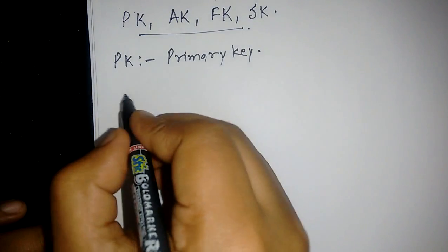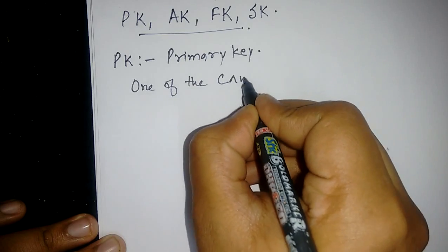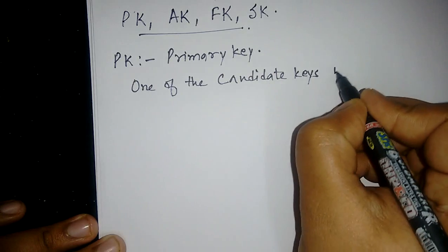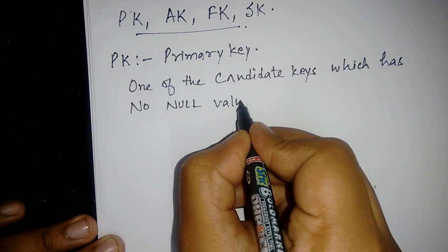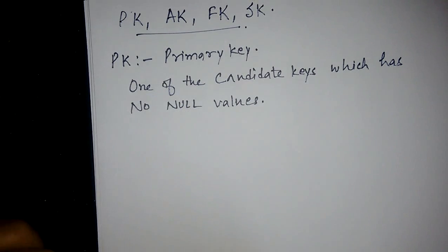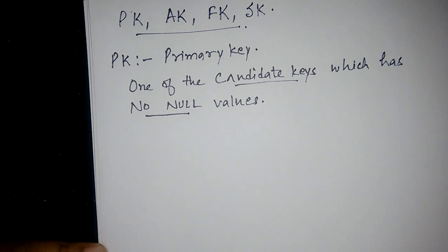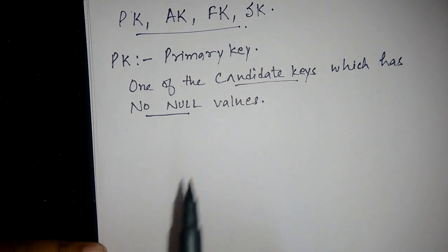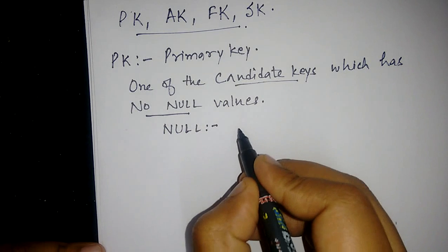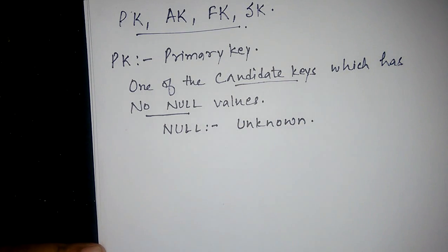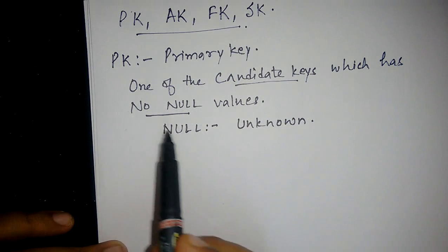As per the definition, primary key is defined as one of the candidate keys which has no null values. There are two important things: one is candidate key, and one is no null value. For the definition of candidate key, please refer to my previous video. Null is basically unknown. Therefore, primary key is one of the candidate keys which has no unknown values.